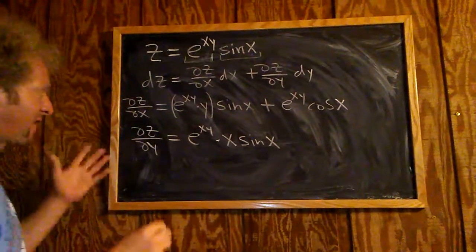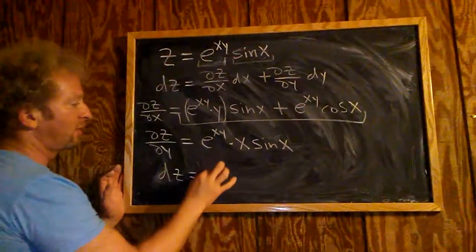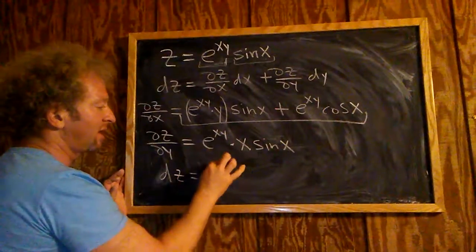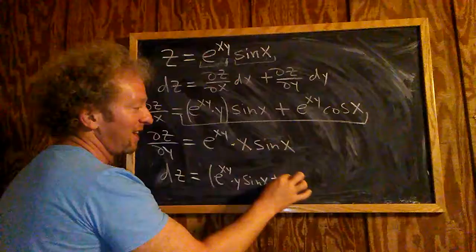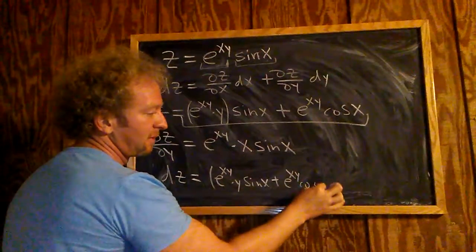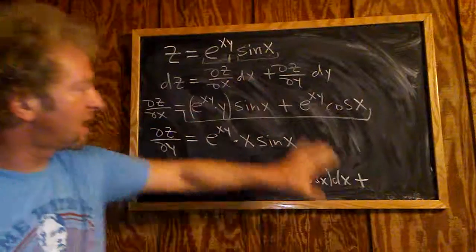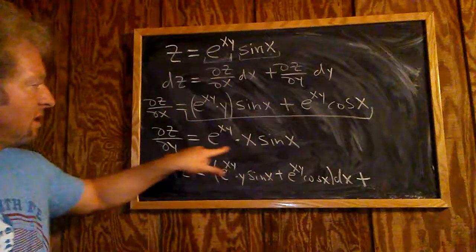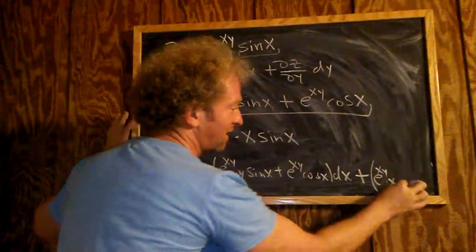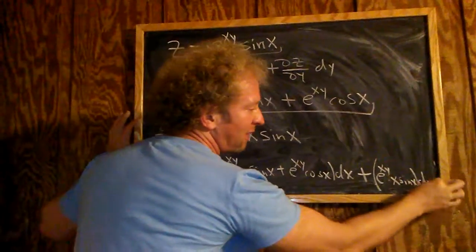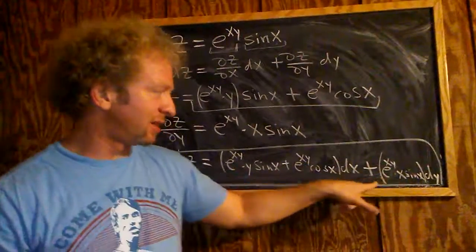Now we're ready to write down the final answer. dz equals ∂z/∂x dx plus ∂z/∂y dy. So that's e to the xy times y plus e to the xy cosine x, all times dx, plus e to the xy times x sine x dy. You could put the y or x coefficients in the front — that would be a little cleaner — but either way is correct.